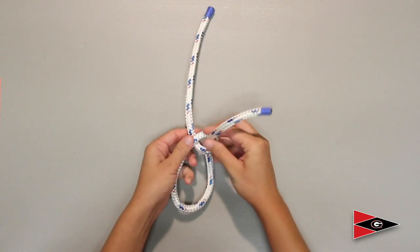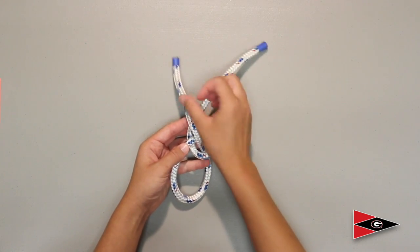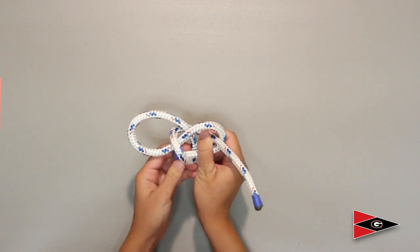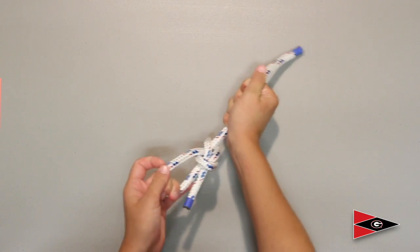Alright, let's say instead of going behind the line with the one coming out of the loop, you go in front of it, and then back through the loop. This will put your tail on the outside of the loop, and this is not a correct bowline, unfortunately.